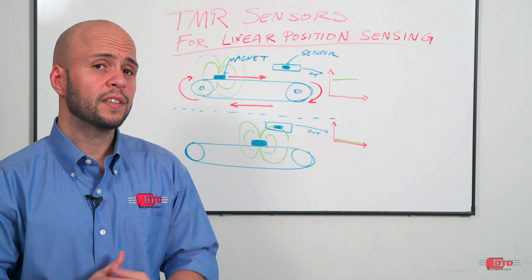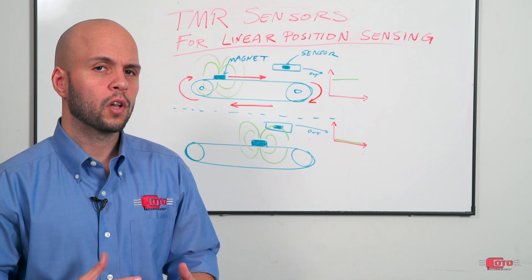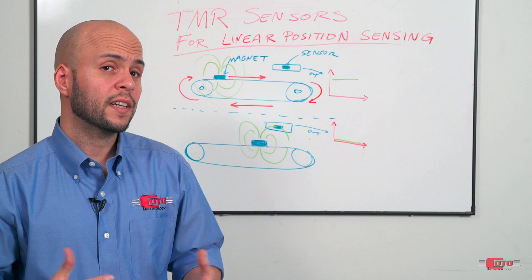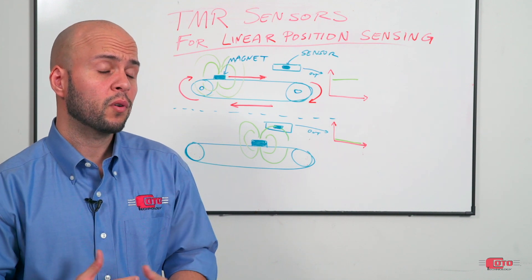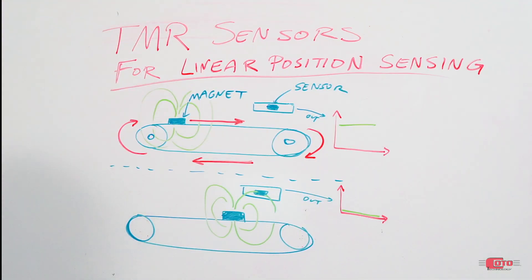Target applications for this can include detecting opening or closure of an automatic sliding gate, or detecting position of a linear actuator or even a conveyor belt. In this video, we'll show a quick demo that uses the output signal of a TMR sensor as feedback to stop a moving motor.